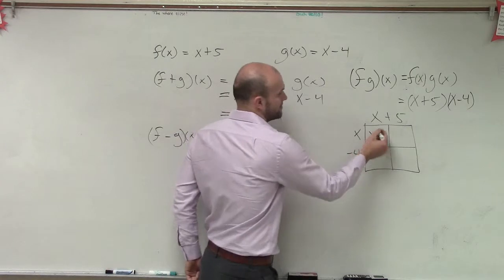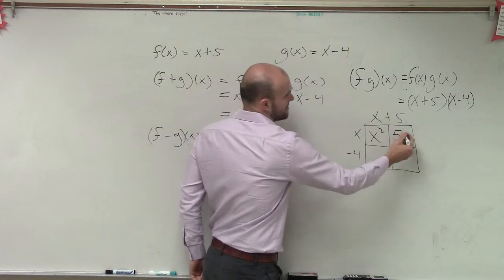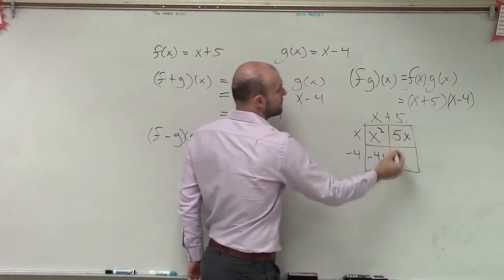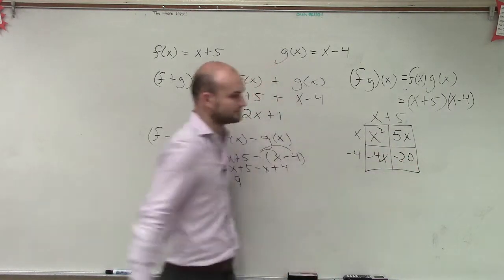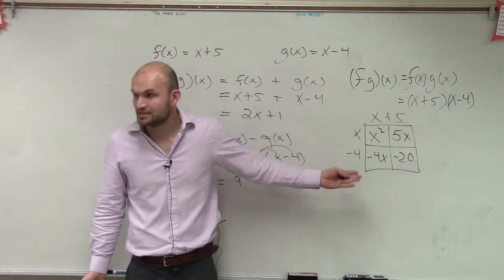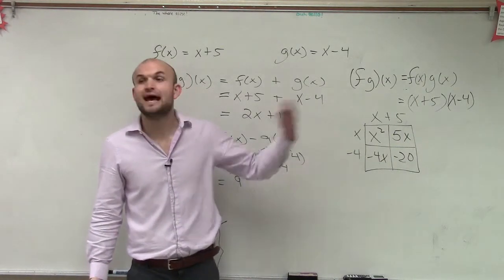x times x is x squared. x times 5 is 5x. x times negative 4 is negative 4x. And negative 4 times 5 is negative 20. Now that I've found the area of all the boxes, to find the total area of the box, I need to add them all up.